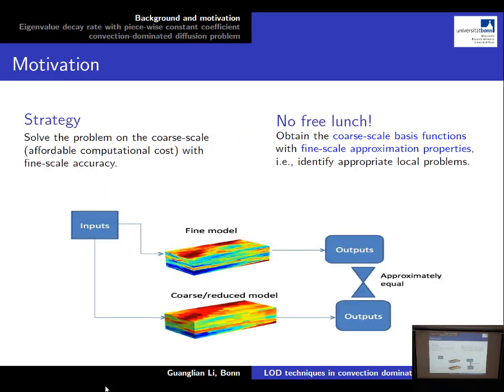The motivation for multi-scale methods is as follows. We will have two meshes: the coarse mesh and the fine mesh. We want to solve the problem on the coarse mesh which cannot resolve the micro-scale features, but still we want to maintain a certain accuracy. Of course there is no free lunch — our price is to solve a number of local problems to gather local basis functions, and we want those local basis functions to have a good approximation to the local solution space.